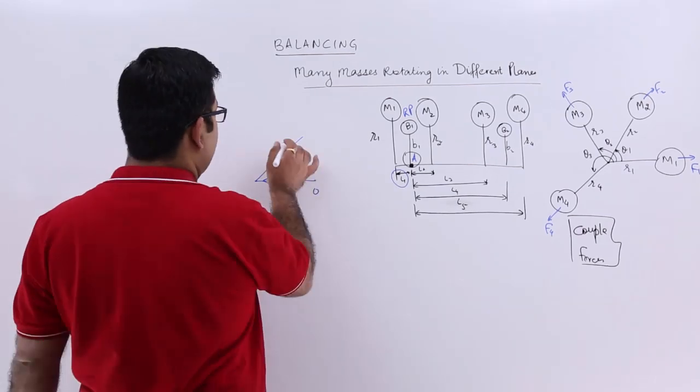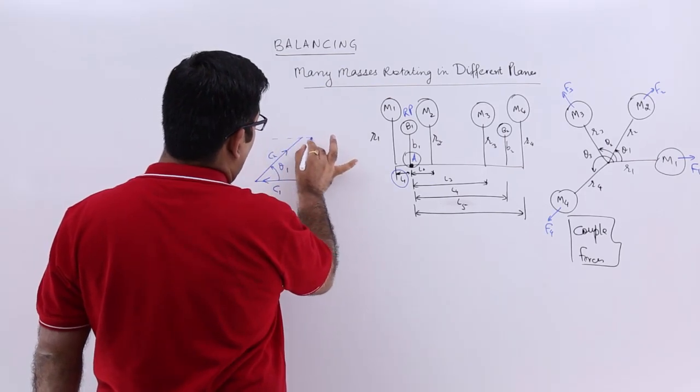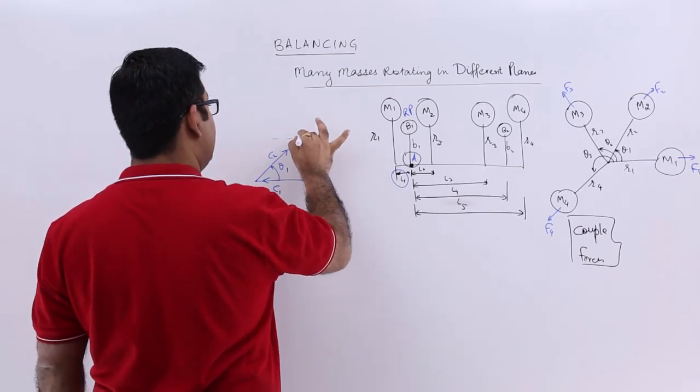And this angle from the horizontal is theta1. Then from C2, we will draw C3. So you will draw a dotted line as the reference. And this is what you get, C3.